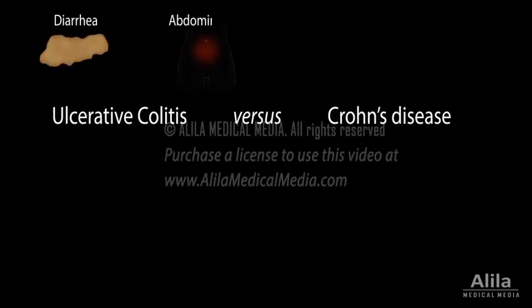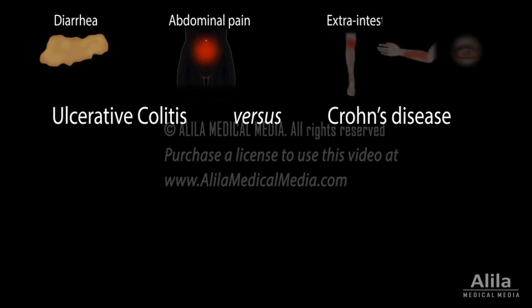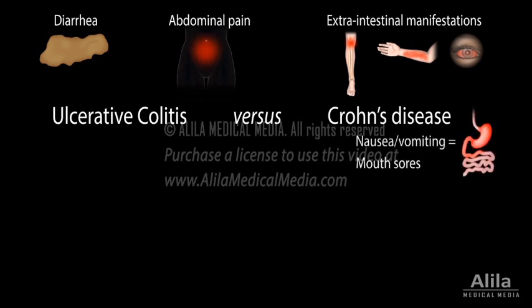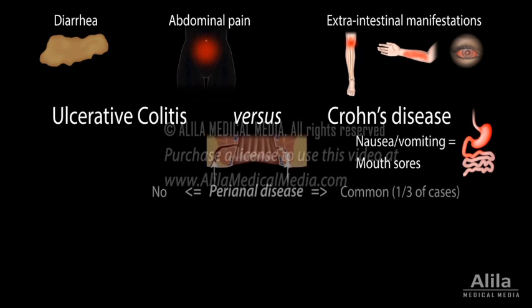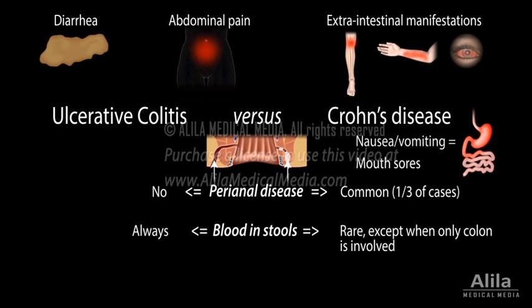The two disorders share many common symptoms, such as diarrhea, abdominal pain, and extra-intestinal manifestations. However, Crohn's disease symptoms can be more variable depending on the affected locations, and often include anal fistulas and abscesses. Intestinal bleeding is much more common in ulcerative colitis, while malnutrition and weight loss is more common in Crohn's disease.